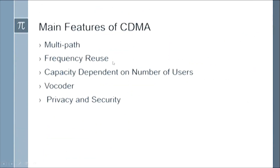The main features of CDMA include: multipath frequency reuse — we can easily reuse frequency in CDMA technology; capacity dependent on number of users; voice codes — the facility of voice coding is available in CDMA; and privacy and security — CDMA provides privacy and security.